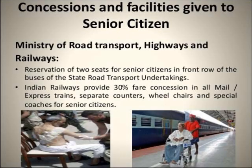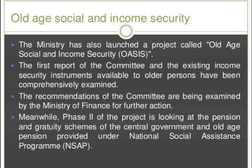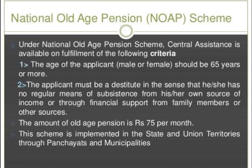Railways reserve two seats for senior citizens in the front row and provide 30% fare concession in all main express trains with separate counters. We also have a separate project called Old Age Social Income Security, also known as OASIS, to provide financial security under the National Social Assistance Program. Under the National Old Age Pension Scheme, central assistance is available for persons at least 65 years old who are destitute — having no regular means of income from their own source or financial support from family members. This scheme is implemented through state and union territories via panchayati raj communities.